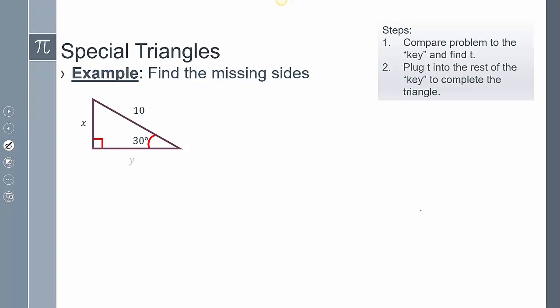For this one here, I can find what my x and y is. I have to compare it to my 30, 60, 90 triangle. We said that's 60 and that's 30. We said this is t, the longest leg is t root 3, and this is 2t. That means I can make the statement x equals t, y equals t root 3, and 10 equals 2t.